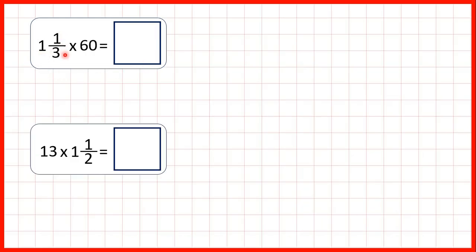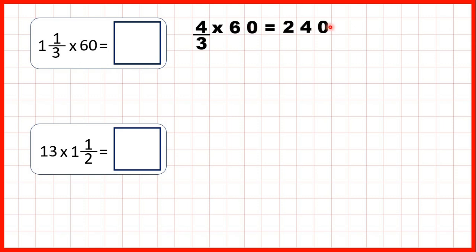Now let's try 1 and 1 third times 60. We can change 1 and 1 third to an improper fraction: 1 times 3 is 3, plus 1 is 4, so that's 4 thirds. We're multiplying by 60, so we remember to only multiply the numerator and keep the denominator the same. 4 times 60 is 240 — because 4 times 6 is 24, and multiplying by 60 gives us the extra zero. The denominator of 3 stays the same, so we have 240 over 3.